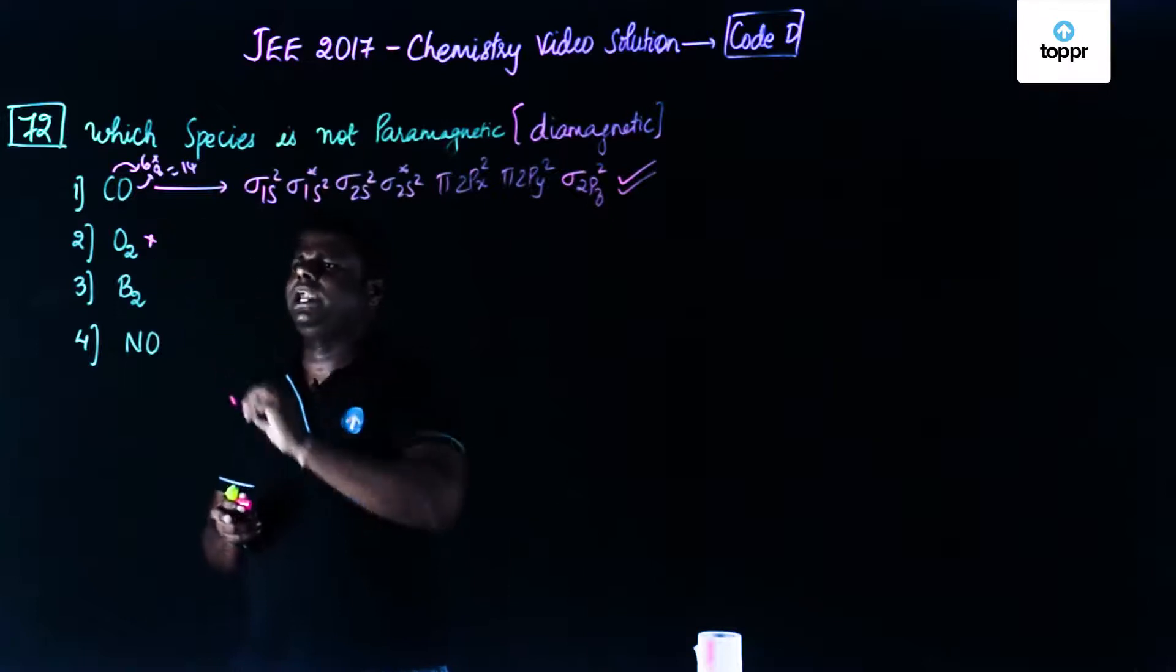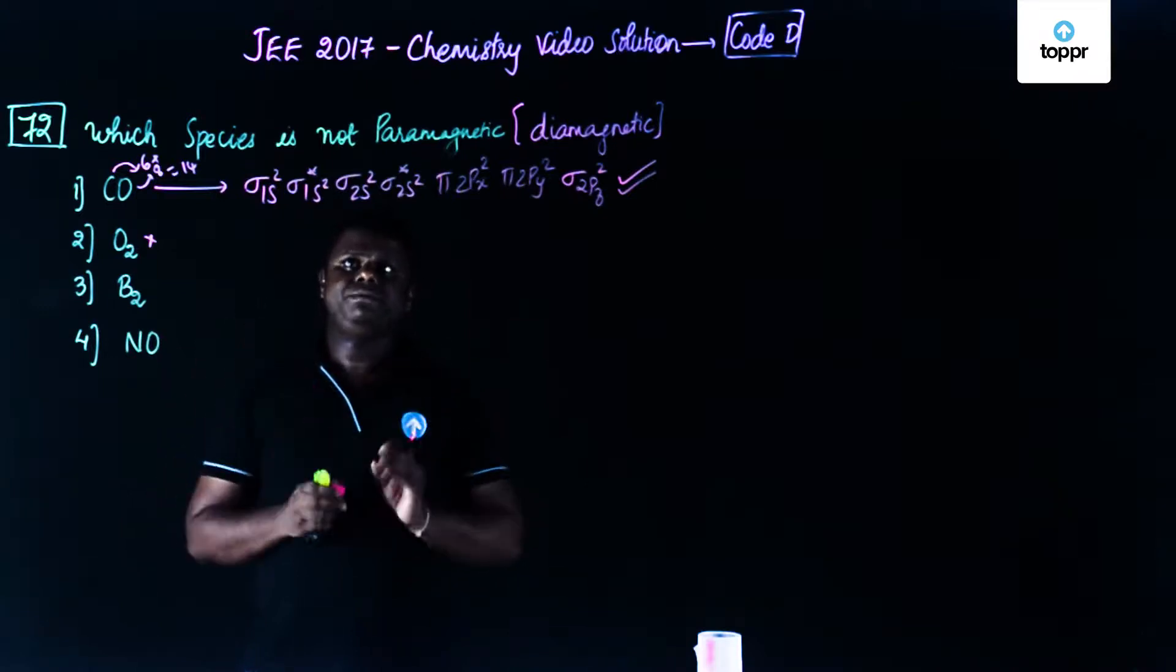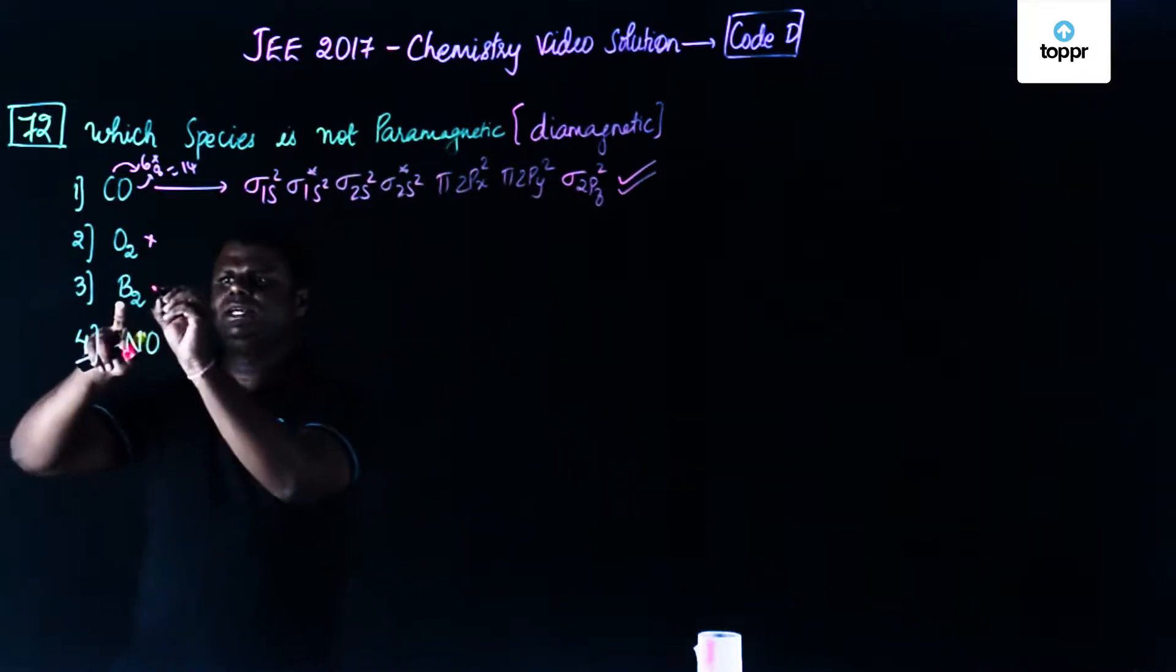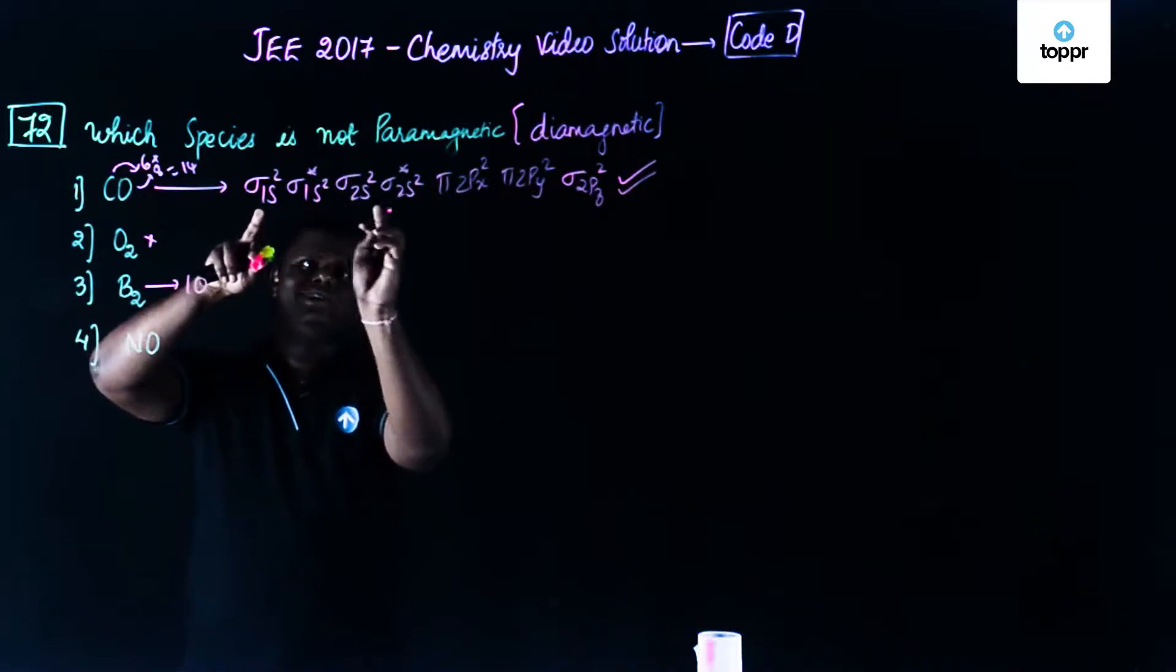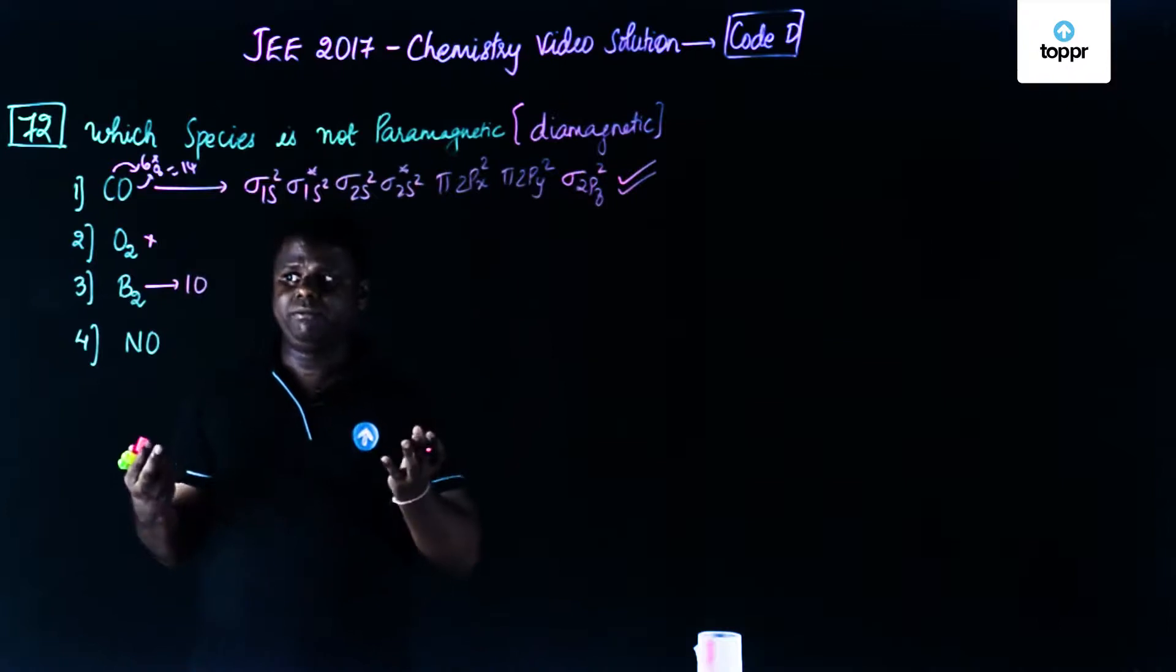We already know that oxygen is paramagnetic, boron is also paramagnetic and then NO is also paramagnetic. Why is it paramagnetic? Paramagnetic means let's say boron, this would contain 10 electrons. It would be like 2, 4, 6, 8 and then it would be 1, 1 rather than 2, 2. So it would be unpaired electron.